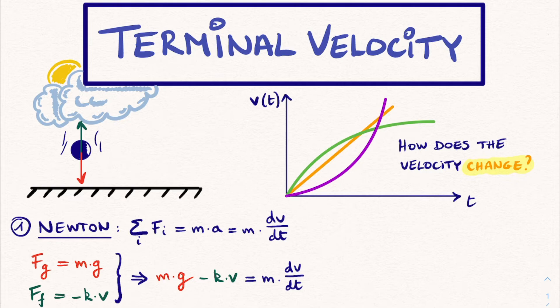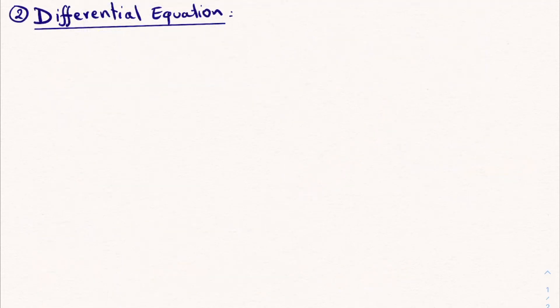What we want to get from this equation is the time evolution of the velocity, so the velocity as a function of time. We see that the equation contains both v and the time derivative of v, which is the acceleration. This is called a differential equation, which brings us to the second step, solving it.